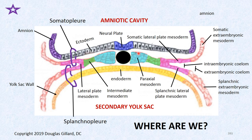This is a view from cranial to caudal — technically a coronal view. We talked about formation of the primitive streak, which you can't really see anymore. We've got a notochord, a neural plate that's going to be folding into a neural tube, and we created the three layers: ectoderm, endoderm, and mesoderm. Now we're going to talk more about the paraxial mesoderm.